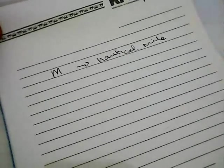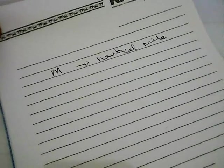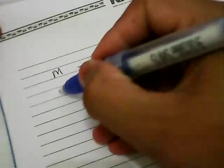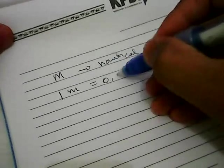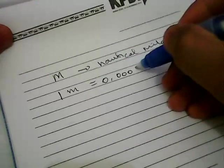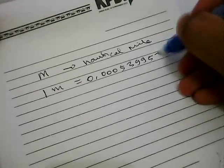Before we start our example, before we solve an example problem, we need to know that one meter is equal to 0.0000539957.